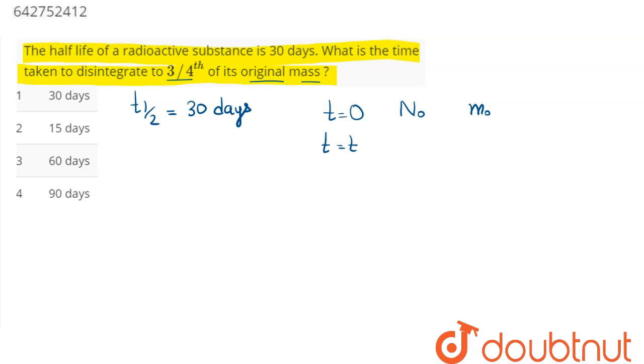after how much time three-fourths of its mass disintegrates. So mass disintegrated equals three-fourths of its original mass, which we can say means the number of nuclei decayed is three-fourths of its original number of active nuclei.